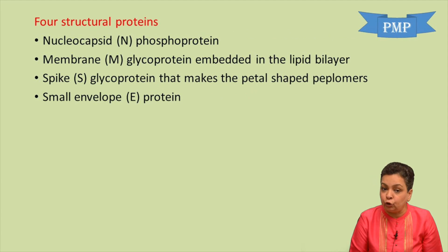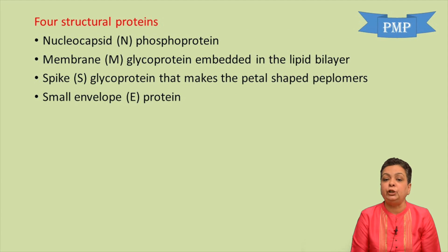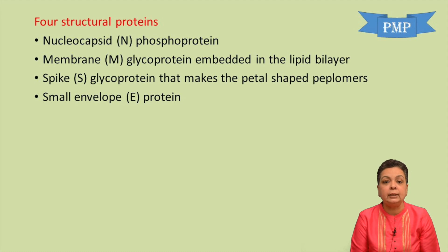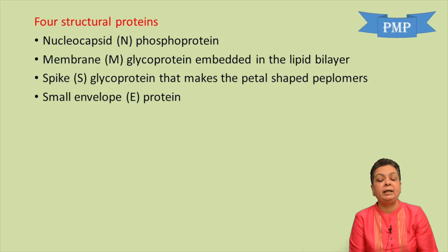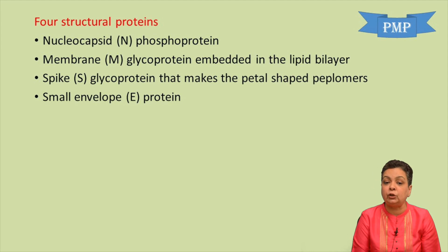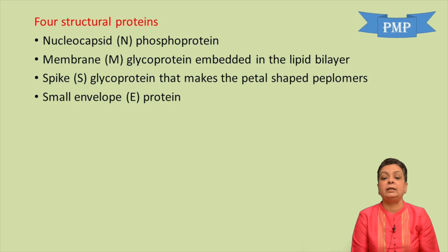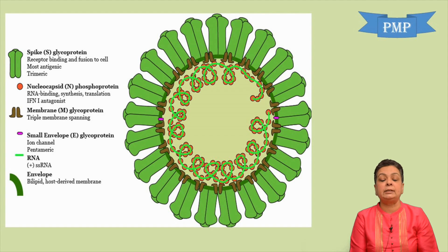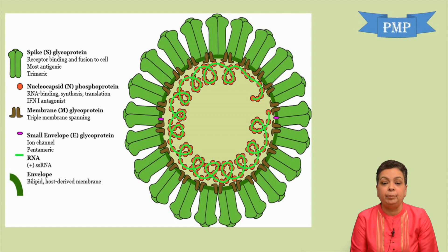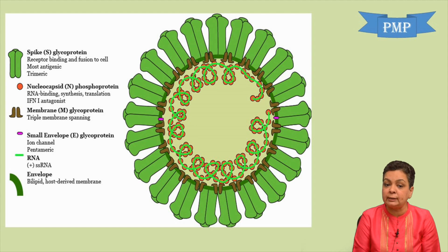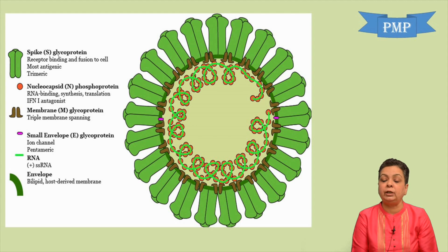The coronavirus genome encodes four structural proteins: the nucleocapsid protein, which encloses the nucleic acid; the membrane glycoprotein, which is embedded in the lipid bilayer; the spike glycoprotein (S1), which makes the petal-shaped peplomers; and a small envelope protein. In the structural diagram, the red protein enveloping the nucleic acid is the nucleocapsid protein, and the spike forms the petal-shaped projections passing through the envelope.